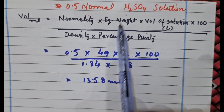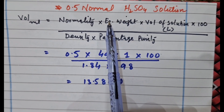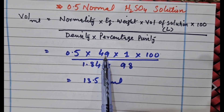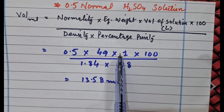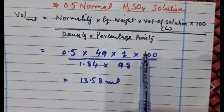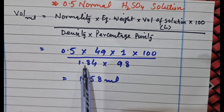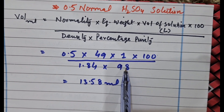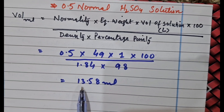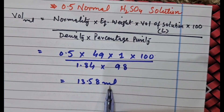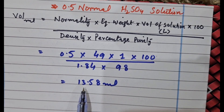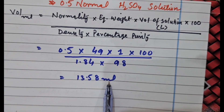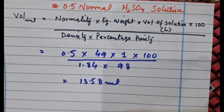Since we are preparing H₂SO₄ solution and the normality given is 0.5 normal, the equivalent weight of H₂SO₄ is 49. 1 represents the volume of solution in liters, and 100 is from the equation. In the denominator, 1.84 is the density and H₂SO₄ is 98% pure. When we solve this equation, the volume that comes out is 13.58 ml. This is the volume that needs to be put into the volumetric flask, and the rest is filled with distilled water to prepare 0.5 normal H₂SO₄ solution.